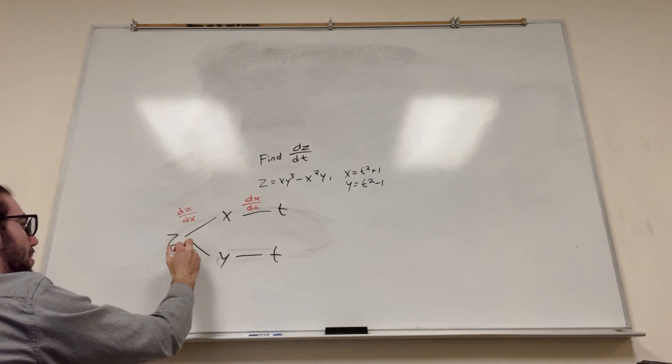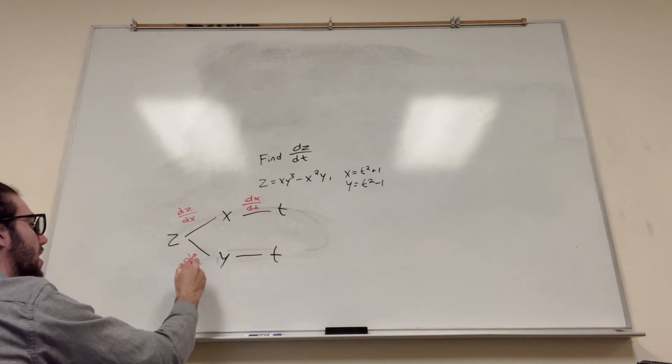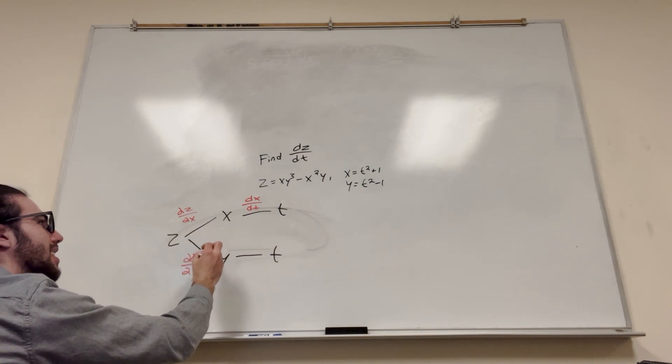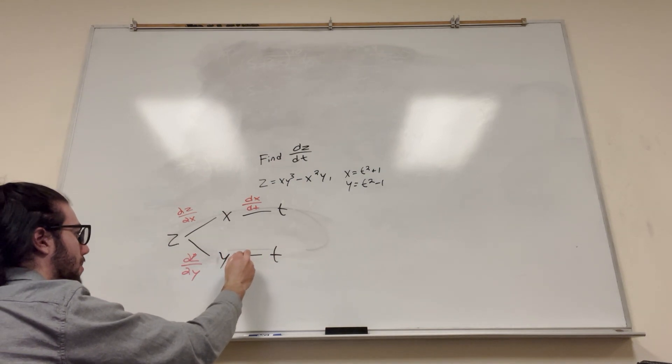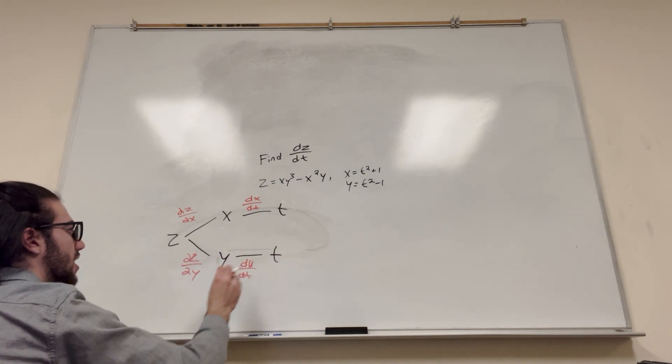Now same thing down here. It's going to be del z, but del y, because you're taking it with respect to y, not x. But then once again, there's only one variable, so it's going to be a normal d, dy dt.